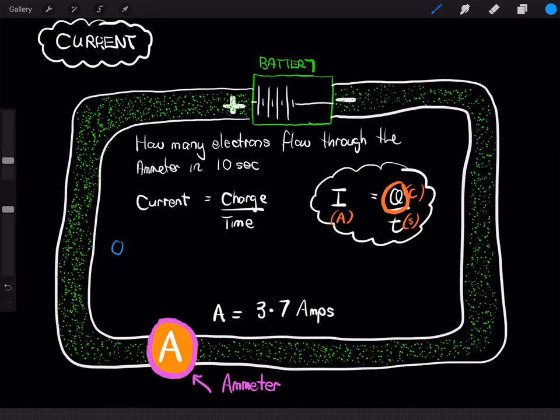So, Q equals I times T. So, it's going to be the current of 3.7 amps, multiplied by the time over which we've been measuring that current, which was 10 seconds. And so, that totals a charge, or equals a charge of 37 Coulombs.